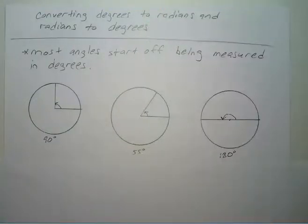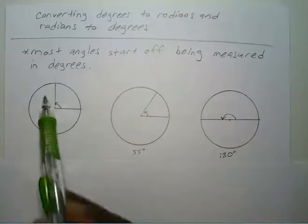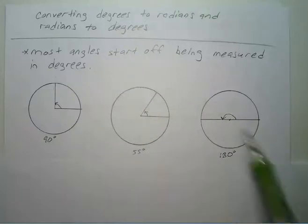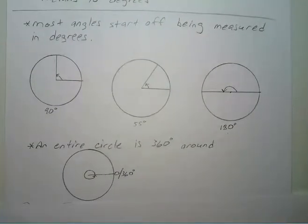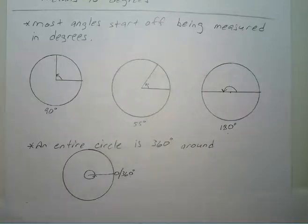Hello everyone. In this video we will be converting degrees to radians and radians to degrees. Most people start off measuring their angles in degrees. You have the right angle which is 90 degrees, a 55 degree angle, the straight angle which is 180 degrees, and an entire circle is 360 degrees around. If you start at a point and go all the way around the circle, you have gone 360 degrees.